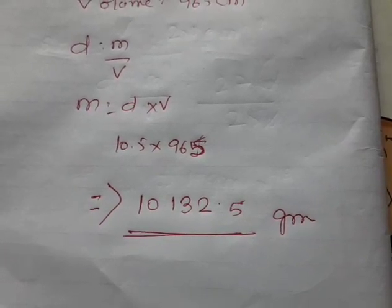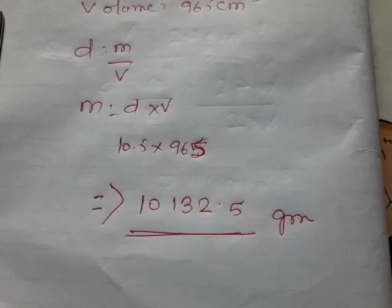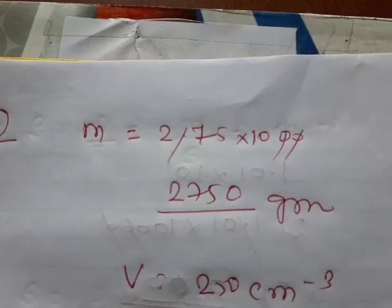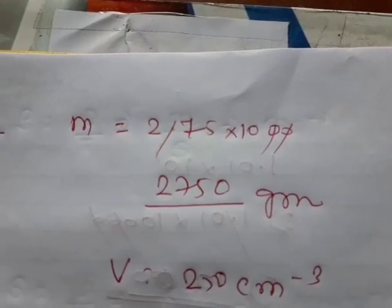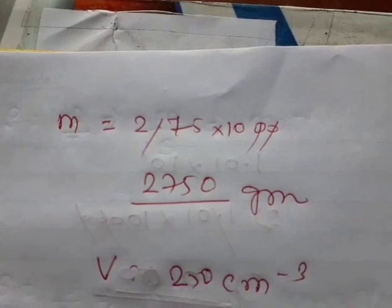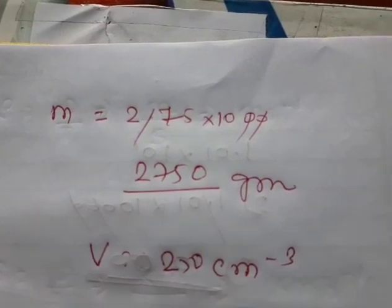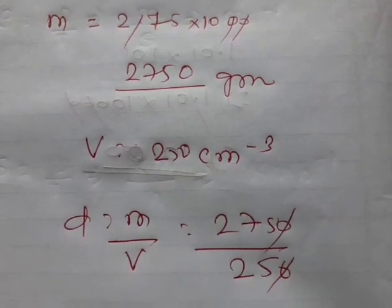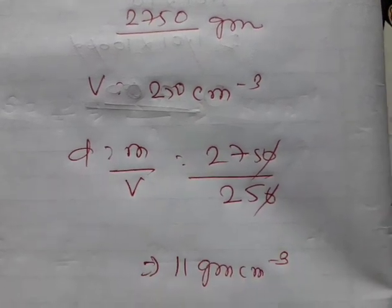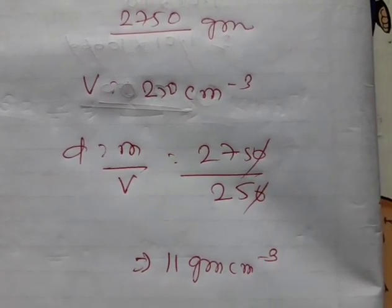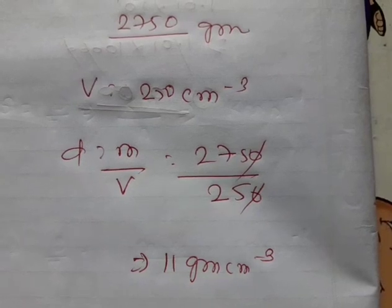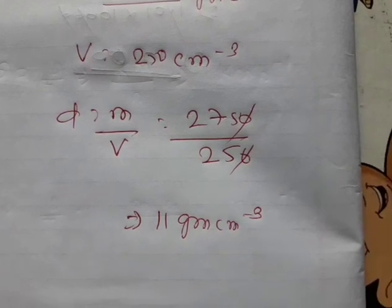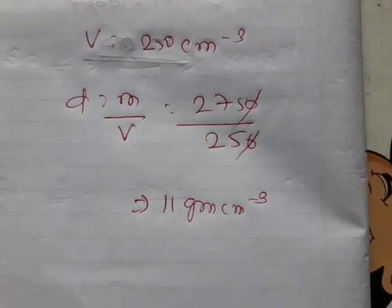Numericals number 4: mass is equal to 2.75 kilograms, which I have converted into grams by multiplying with 1000, so it is 2,750 grams. Volume is equal to 250 centimeter cube. If you divide 2,750 with 250, or cancel the zeros and divide 275 with 25, the answer is 11 grams per centimeter cube.